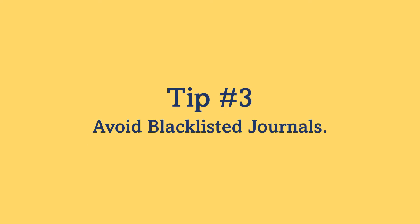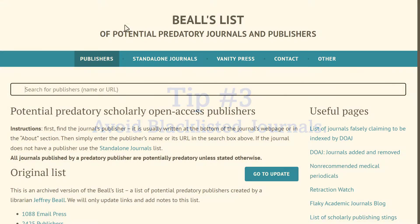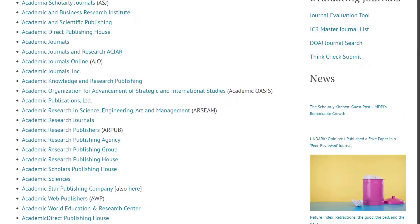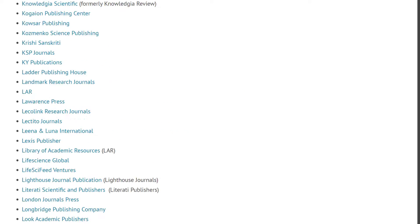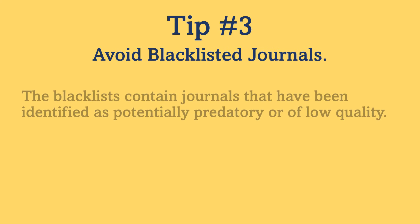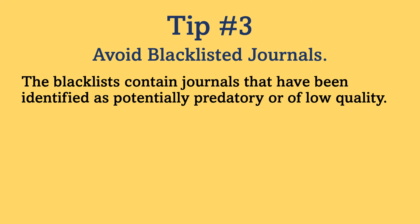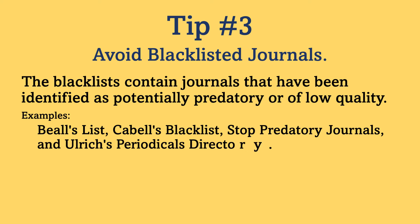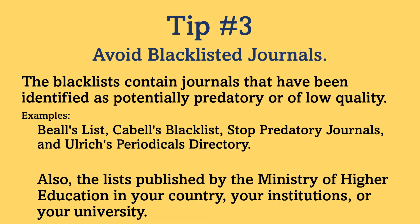Tip number three: avoid blacklisted journals. Make sure that the journal or publisher that has published the article is not listed in any blacklist. These blacklists contain journals that have been identified as potentially predatory or of low quality. Here you can see some of these blacklists. Also check the list published by the Ministry of Higher Education in your country, your institution or your university for further reference.